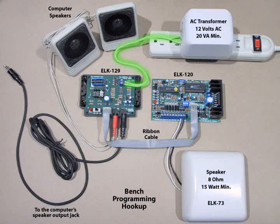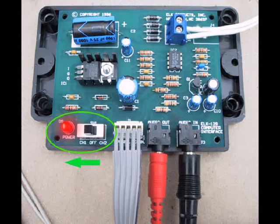Connect a 12-volt 20VA minimum AC step-down transformer to the AC terminals on the ELK 129, located under the cover. Then plug the transformer into an AC receptacle. To confirm the power connection to the ELK 129, move the SW1 power switch to CH1 and look for the power LED on.